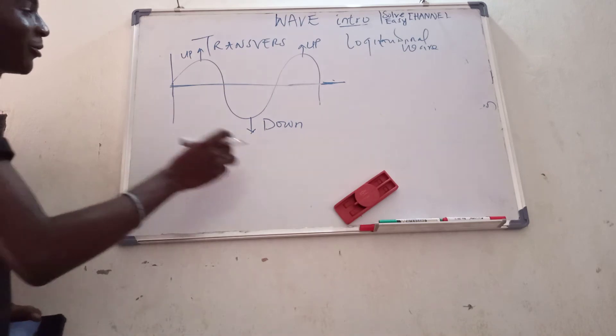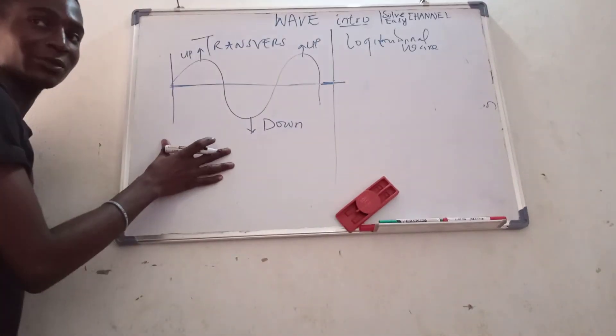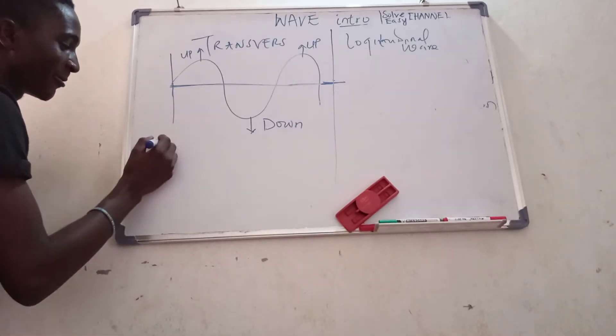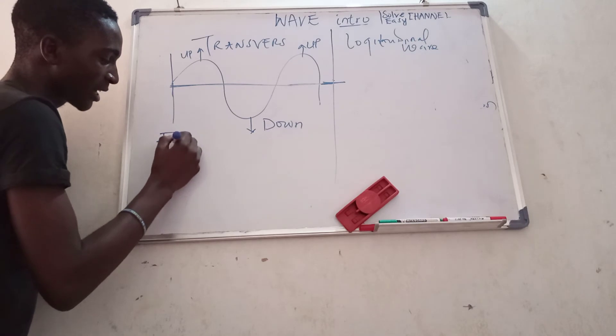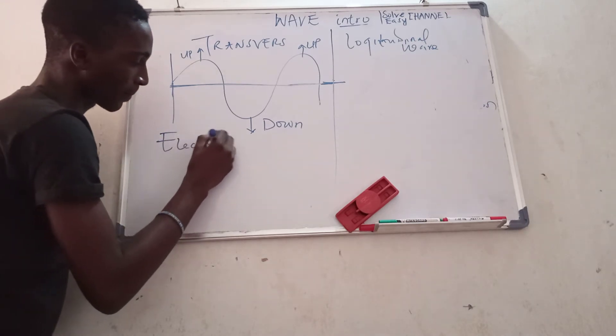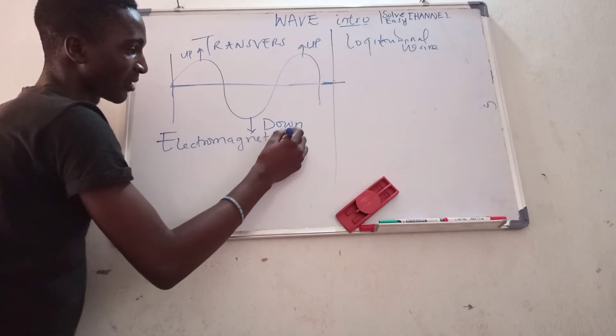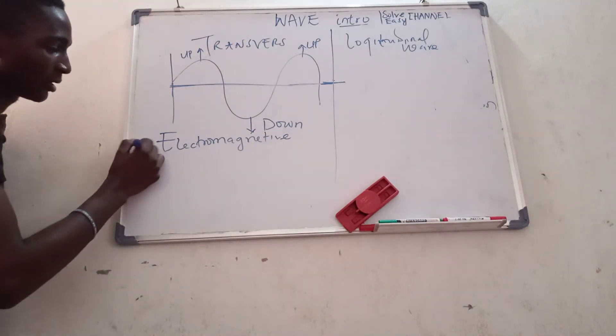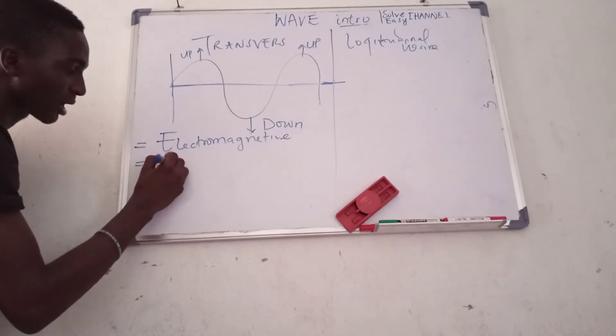Now, an example of transverse waves before we continue: all electromagnetic waves are transverse waves. And another example of transverse waves is our water wave.